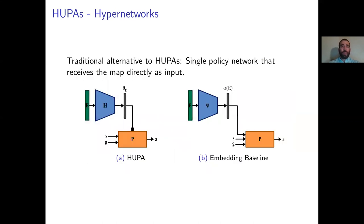The traditional alternative to HUPAS is the embedding one. This approach learns a single policy network which receives the map directly as input.